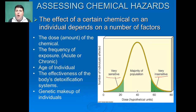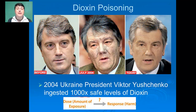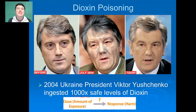Overall genetic makeup is going to impact the response to a particular chemical, because our genes really help to dictate our sensitivity to certain chemicals. For example, let's look at the former president of Ukraine, Viktor Yushchenko. In 2004, he was poisoned with dioxin, ingesting over 1,000 times the safe levels.